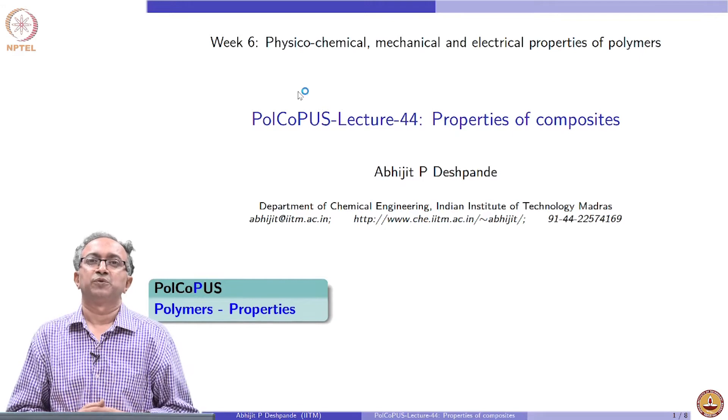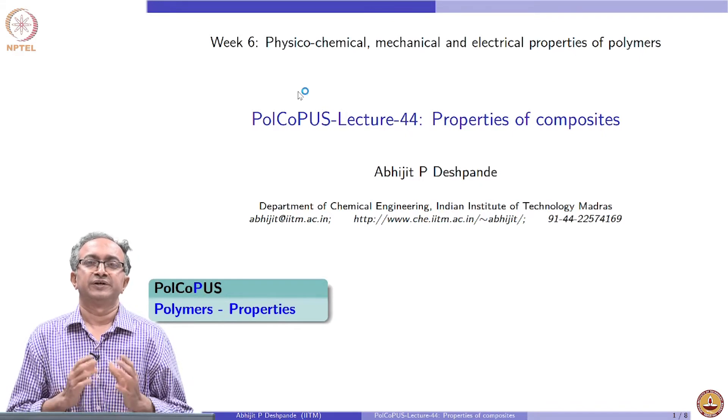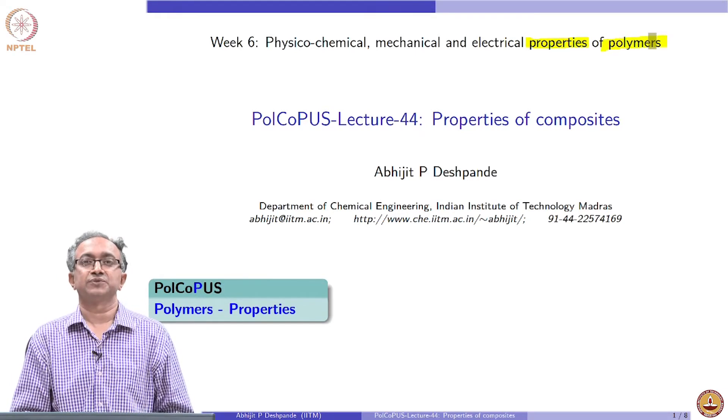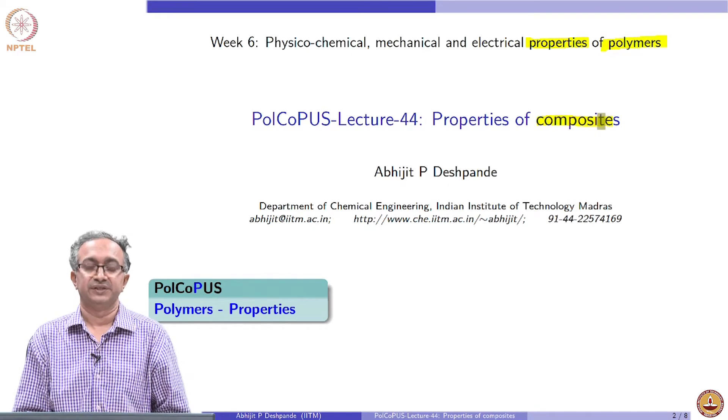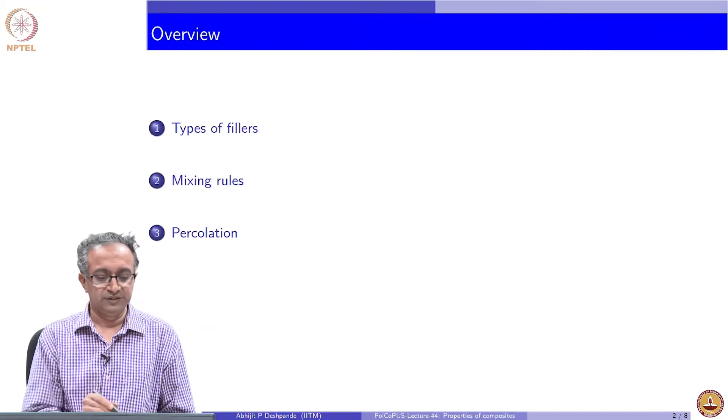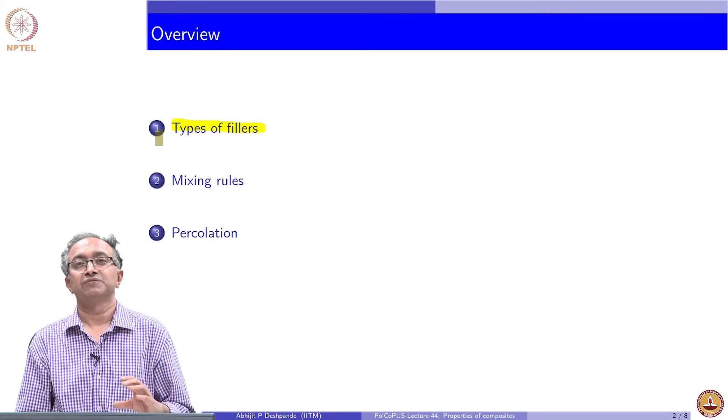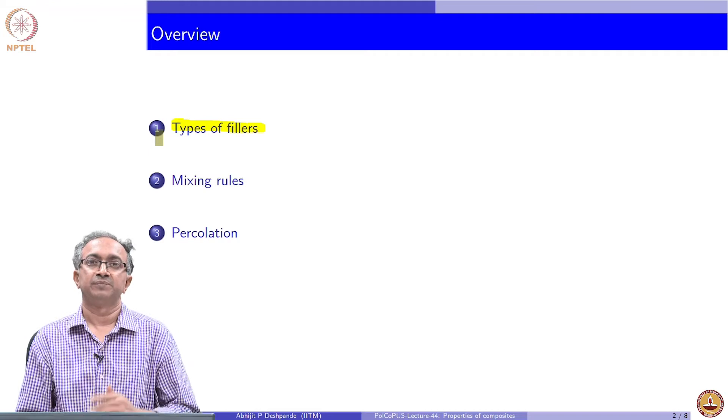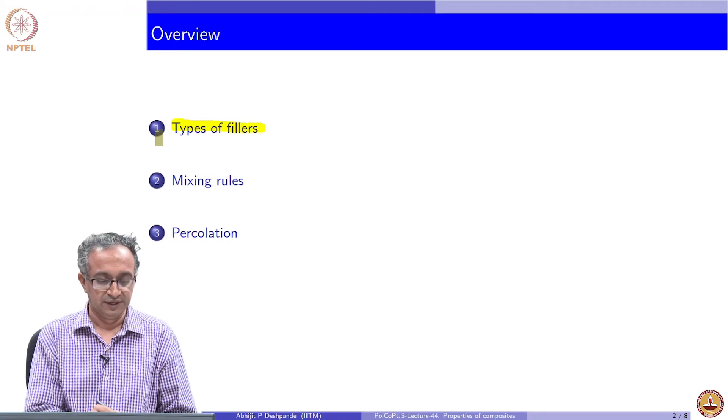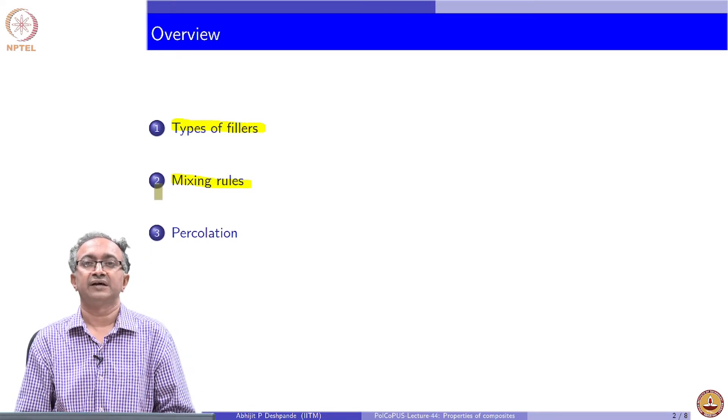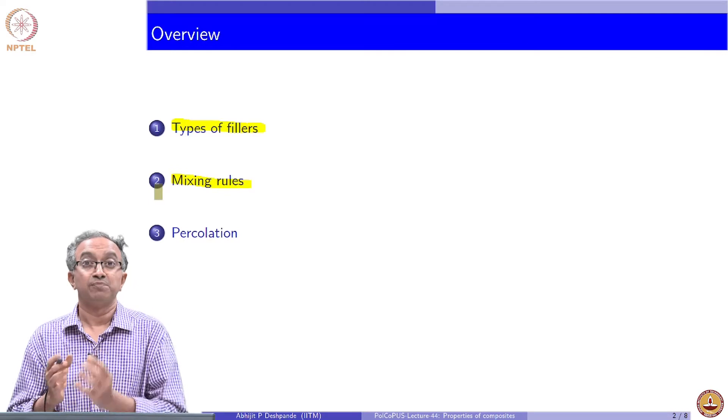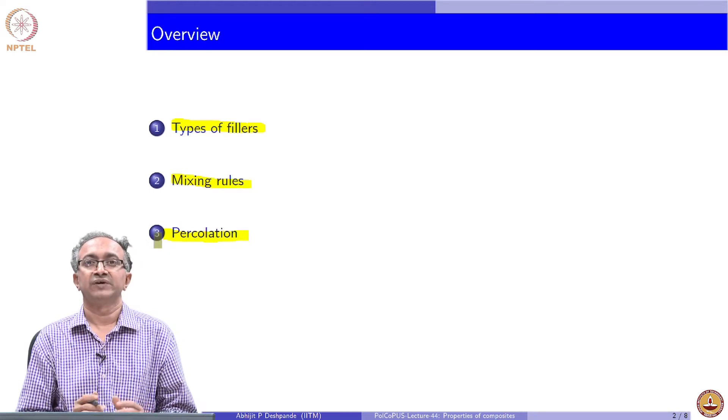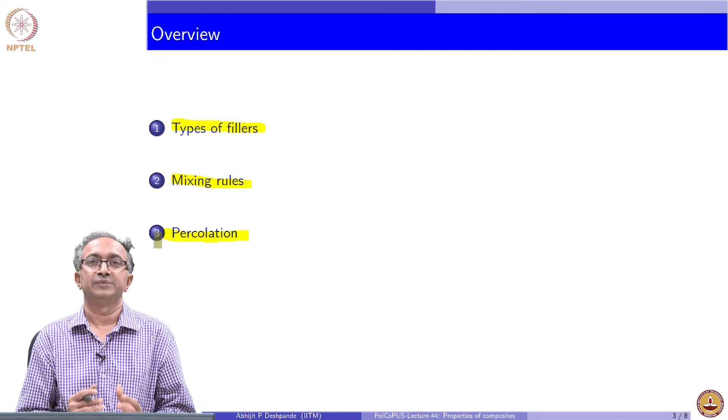Hello, in this journey of understanding about polymeric materials, we are in the sixth week where we are focusing on properties. Given that we have looked at so many polymeric systems of different kinds, let us look at properties of composites in this lecture. We will do this by first looking at what are the different types of fillers or reinforcements which are used in these composite materials, because the type of fillers will determine the eventual properties of these material systems. Then we will look at some simple mixing rules which are guidelines to look at how the properties of a composite system depend on the constituent properties. And one of the important ideas related to percolation, whenever we have a continuous network of filler being there in the system.